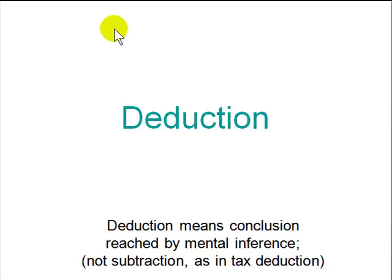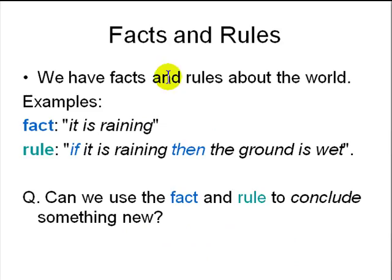This is about deduction. What is deduction? Deduction is to reach a conclusion by logical inference — it is not suppression, as in tax deduction. This is about reaching a conclusion from some facts and rules. We start with some facts and rules and then try to come to some conclusion. That is basically the crux of deduction.